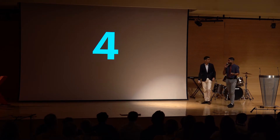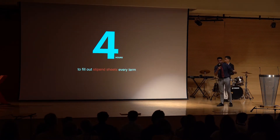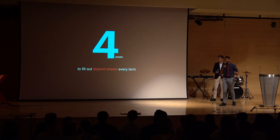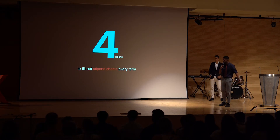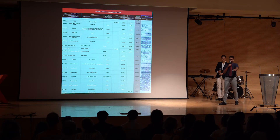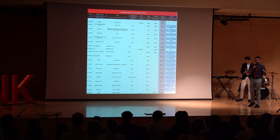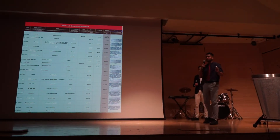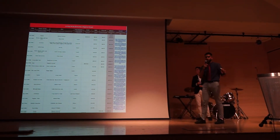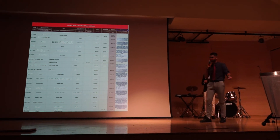It takes an average of four hours for an average full-time TGS student to fill out stipend sheets every term. What are stipend sheets? This is a stipend sheet. For every meal that we have, we have to record the date, where we bought our meal, what the meal was, how much it cost, and most importantly, a receipt linked to Google Drive for proof of purchase.